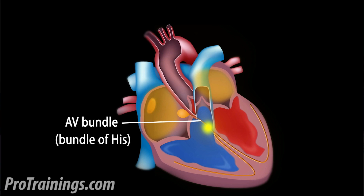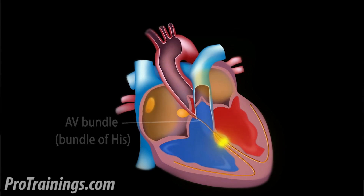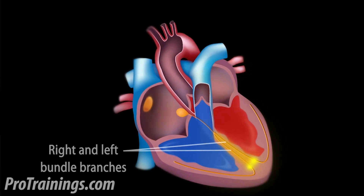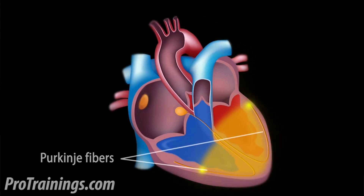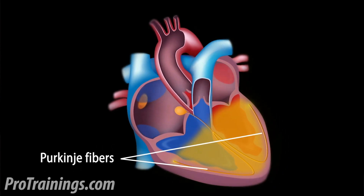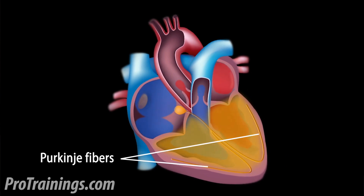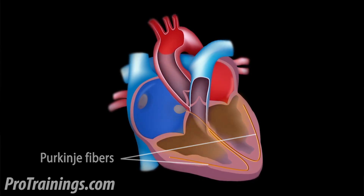After the impulse reaches the bundle of His, it travels down the length of the interventricular septum and leads to the left and right bundle branches. The left bundle branch has two fascicles because the left ventricle is larger than the right ventricle. These bundle branches terminate into the Purkinje fibers, which depolarize the ventricular cells and cause the ventricular muscles to contract.